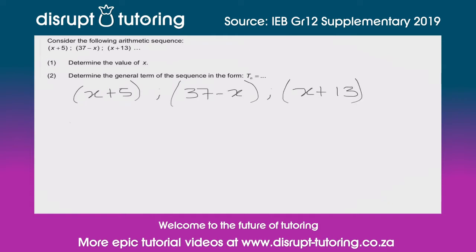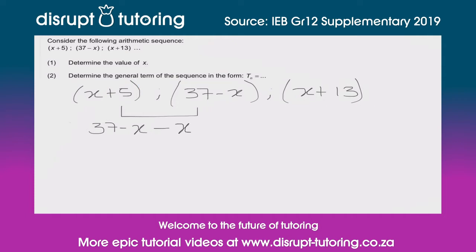They've asked us to determine the value of x. When it comes to a sequence like this, it's always important to start looking at the difference between the different terms. It's a little weird because we've got variables in here, but let's proceed as normal. So we've got (37 minus x) minus — remember we need to subtract this whole term, so we need to apply the distributive law to change the signs.